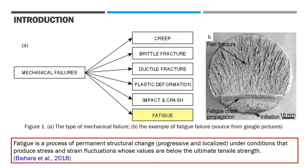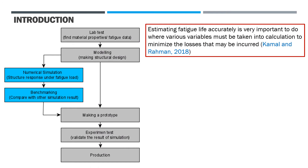Static and dynamic loads are important things that must be considered when designing mechanical structures. Dynamic loads that are under static yield strength can cause failure if repeated for a long time. This phenomenon is often called fatigue failure. Fatigue is a process of permanent structural change that is progressive and localized under conditions that produce stress and strain fluctuation whose values are below the ultimate tensile strain. Fatigue failure often occurs suddenly without any prior warning, so that it can lead to disaster. Estimating fatigue life accurately is very important, where various variables must be taken into calculation to minimize the losses that may be incurred.